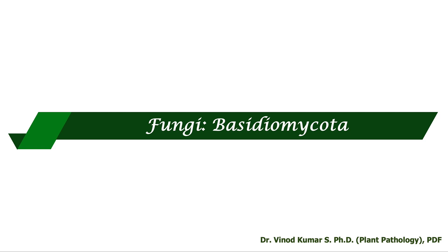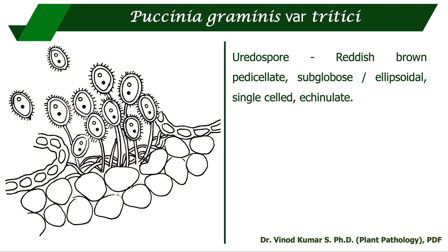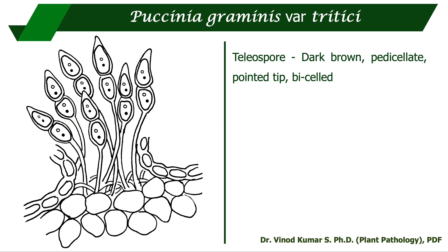Coming to Basidiomycota, which covers mostly rust pathogens, smut pathogens, and some root rot pathogens. Puccinia graminis variety tritici causes black stem rust of wheat. In the uredosorus, the uredospores are pedicellate, reddish brown, sub-globose or ellipsoidal, single-celled, and echinulate — having spine-like structures on the surface. The teliospores of Puccinia graminis variety tritici are dark brown, pedicellate, with a pointed tip, and bicelled.